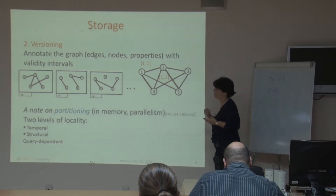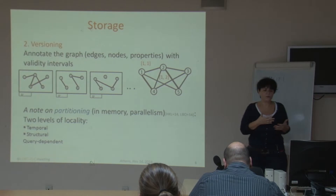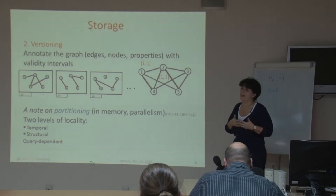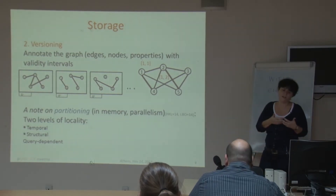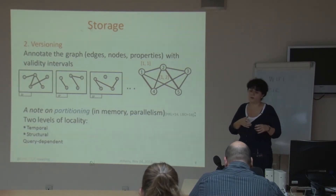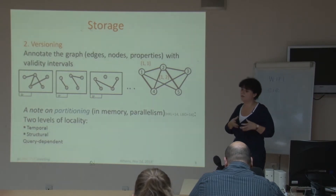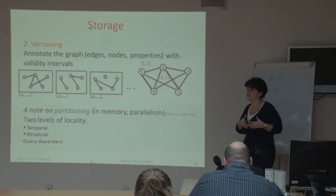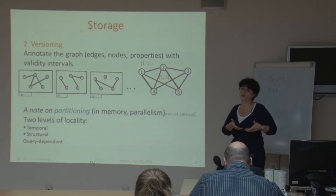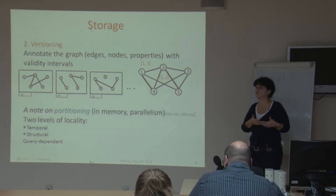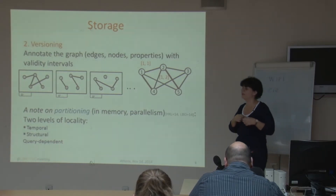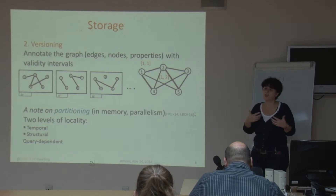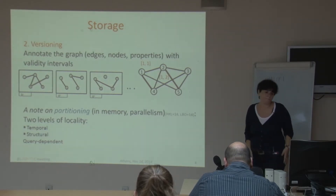Another point about storage is related to locality. Graphs are known for their poor locality, and what we usually do is try to take advantage of their structural locality — storing together nodes that are near in the graph. Historical graphs introduce a new form of locality: temporal locality. We may want to store together elements that refer to points near in time. So when you have a sequence of graphs, you have different forms of locality that you may want to combine.